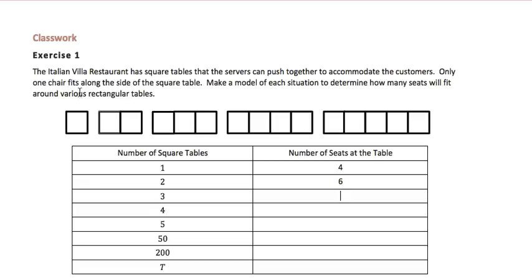If there are 3, there would be 8. If there are 4, there would be 10. And if there are 5, there would be 12 seats at the table.